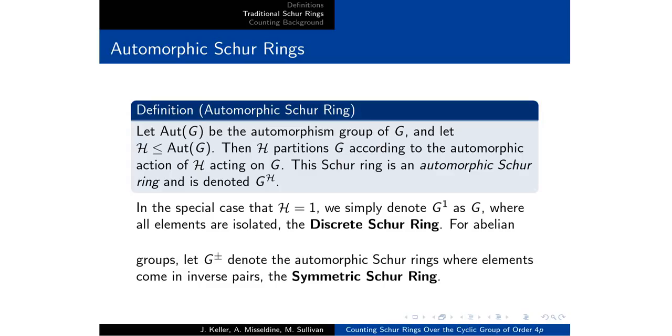We also have automorphic Schur rings. Given any automorphism or subgroup of the automorphism group, it partitions the group and that partition is the automorphic Schur ring. If H is simply one then each element is its own class and we call that the discrete Schur ring. And if each element is together with its inverse we call that the symmetric Schur ring.